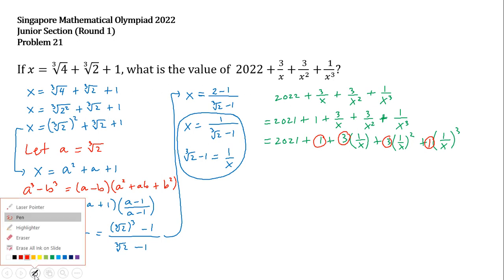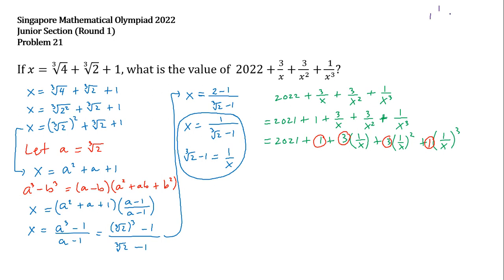If we recall Pascal's triangle: 1; 1, 1; 1, 2, 1; 1, 3, 3, 1; and so on. The first row shows the coefficients of the expansion of (x plus y) raised to 0, the second row for raised to 1, and the fourth row — 1, 3, 3, 1 — corresponds to (x plus y) raised to 3.